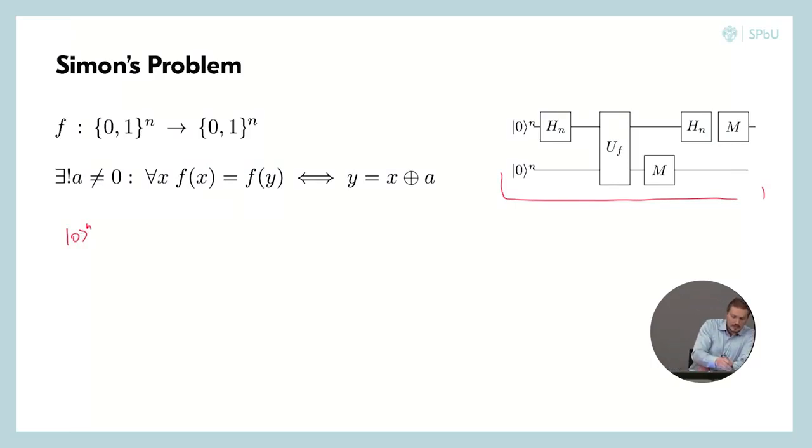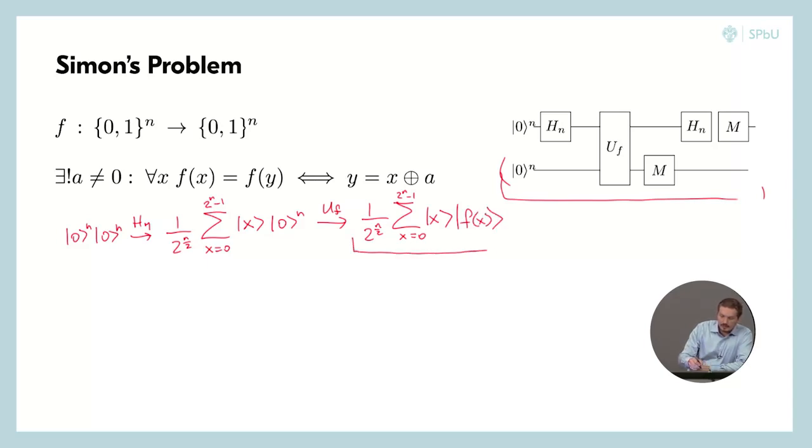Let's apply it and then talk. So we have n zeros, n zeros here and we have Hadamard only on this first n zeros. So it's 1 divided by 2 to the n divided by 2, sum over x from 0 to 2 to the n minus 1. So here's our formula for the Hadamard transform. x and zeros stays here in this register. And then we apply quantum oracle which is really simple here in this case. So again this sum x and f of x.